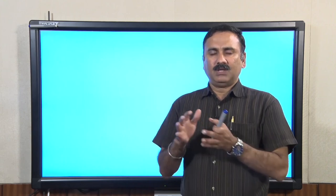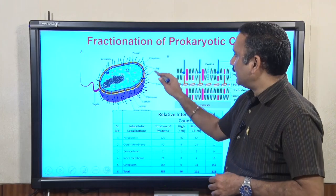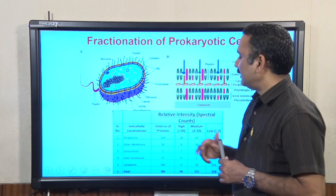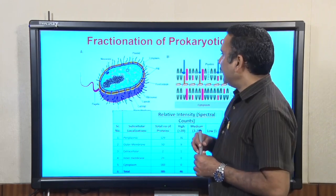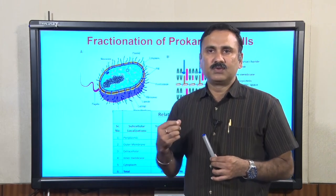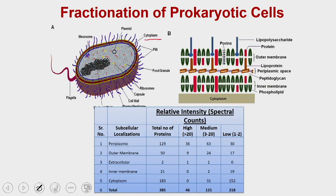In the case of prokaryotic cell as well as eukaryotic cell, you have different regions which could be important for recovery of the product. In a typical prokaryotic cell, you have the capsule, then the cell wall, then the plasma membrane, and inside you have the cytosol or cytoplasm. The two major places where you can extract proteins are the cytoplasm and the periplasmic space.